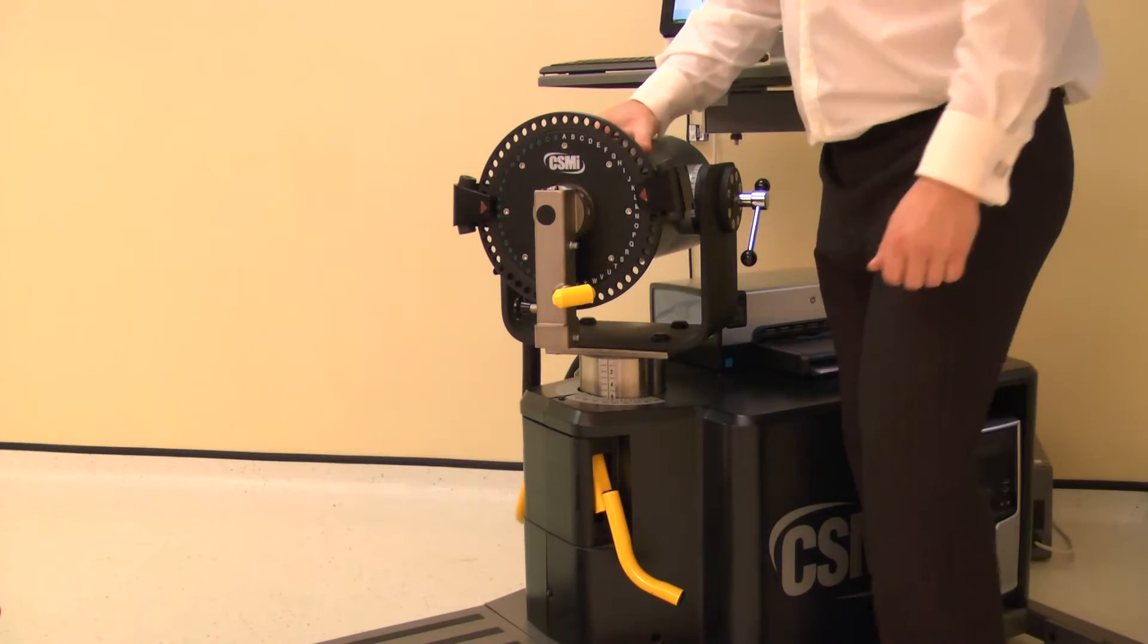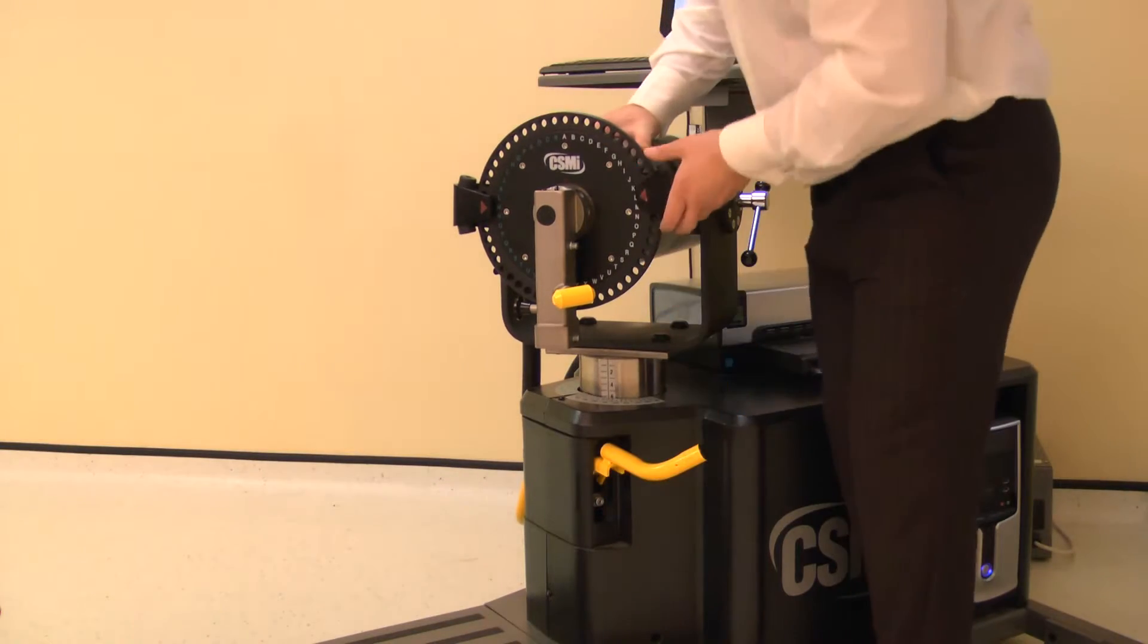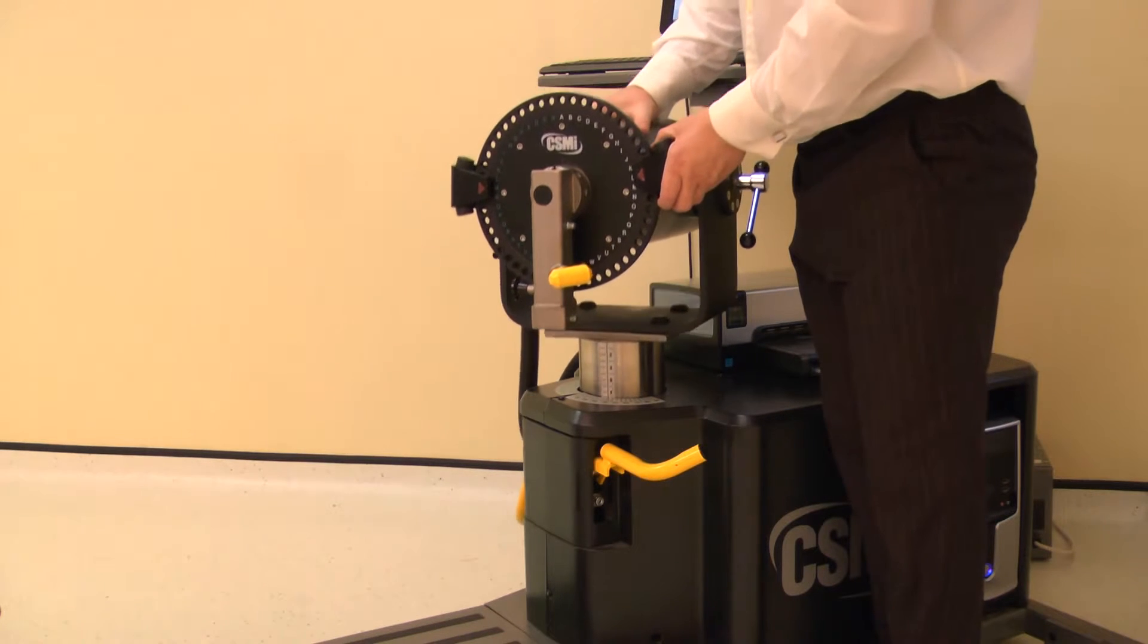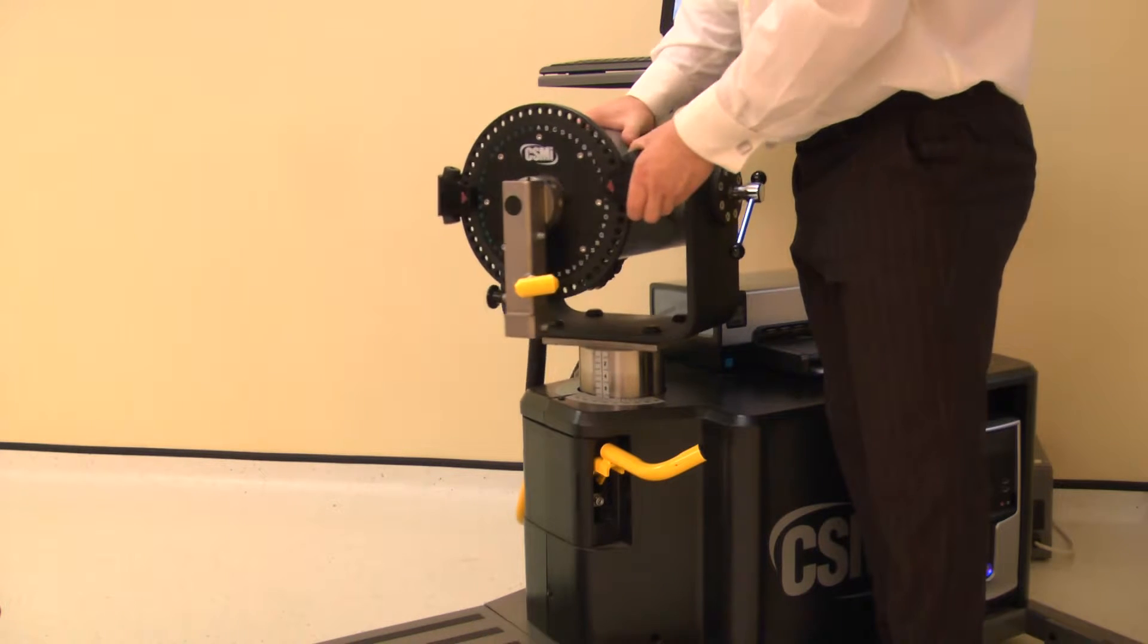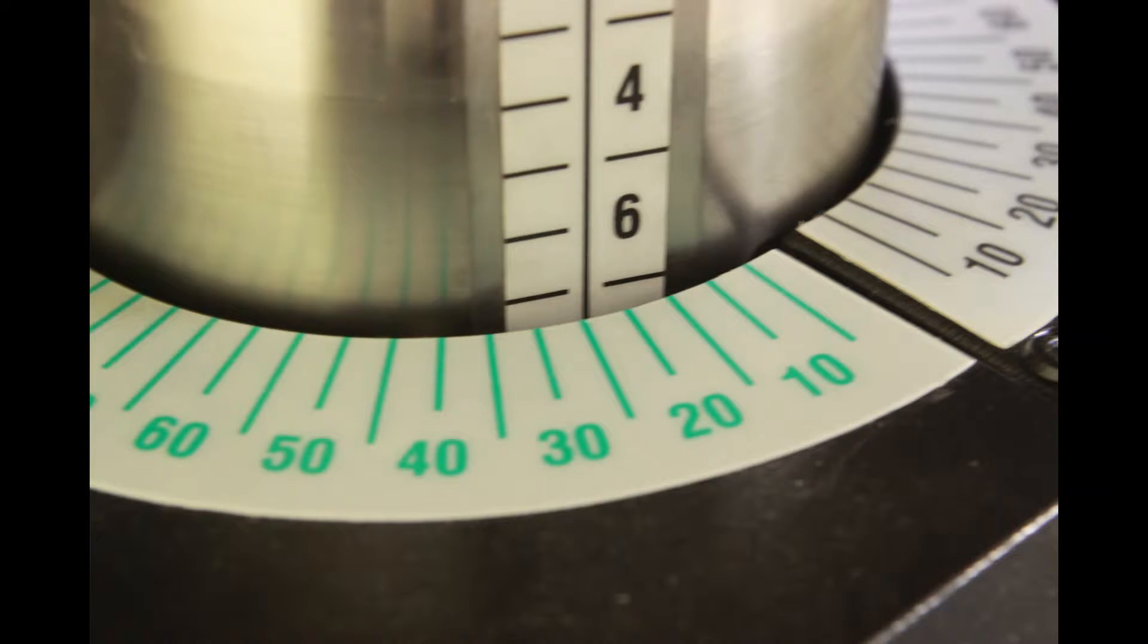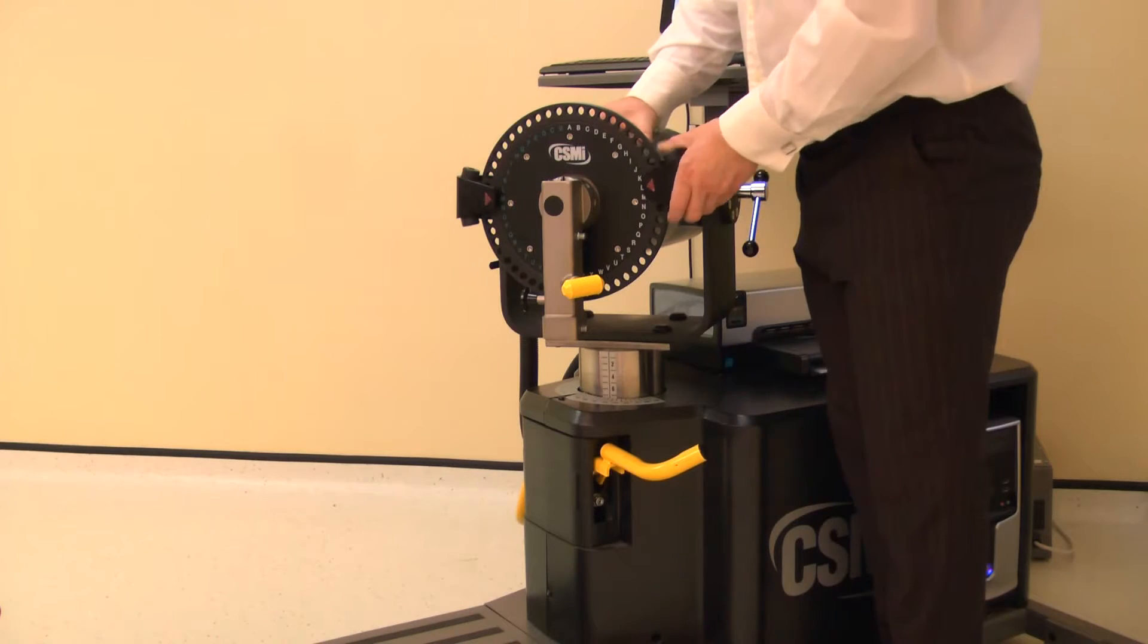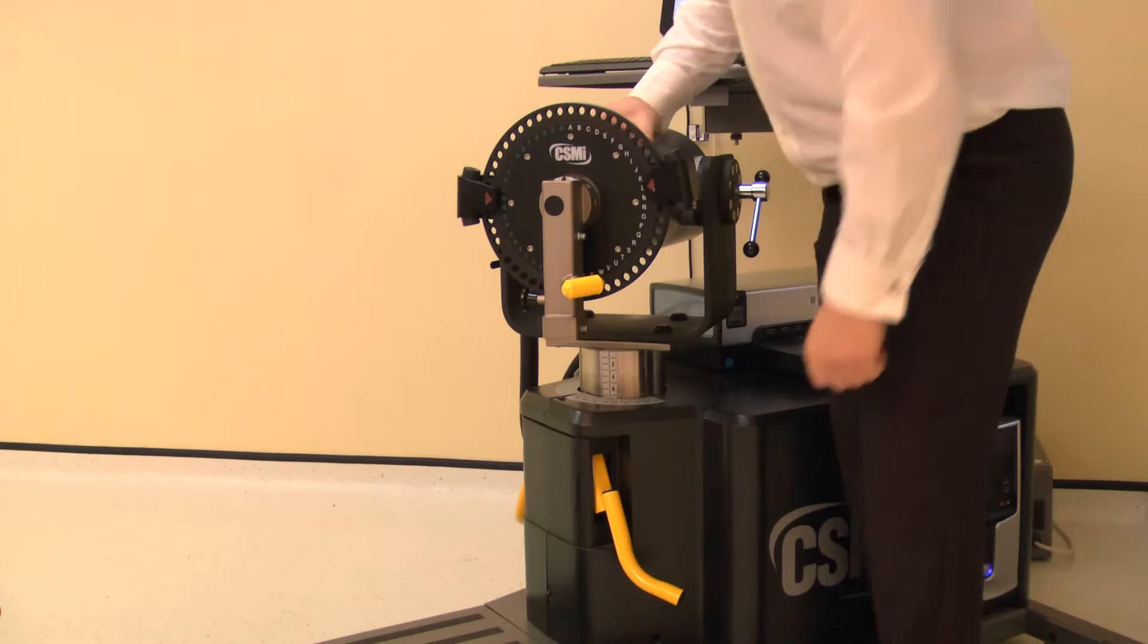The dynamometer height and rotation are adjusted together. Lift a locking handle to release. Rotate the dynamometer to 25 degrees on the green scale, whilst also adjusting the height to position 7. Ensure both locking handles are pushed down to secure.